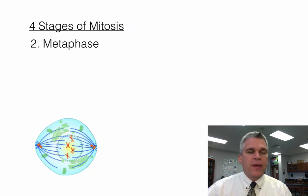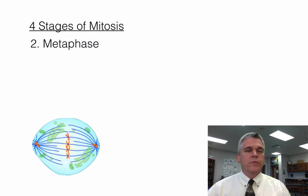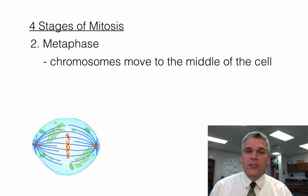In metaphase, the chromosomes are now all lined up in the center of the cell, and you can see how they're all attached to a spindle fiber. So what's happening is these chromosomes that actually made a copy of themselves before all this started are going to separate from one another.